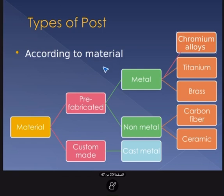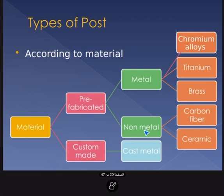There are many classifications of posts according to material. Posts can be pre-fabricated or custom-fabricated. Pre-fabricated metal posts include chromium alloy, titanium, and brass. Non-metal pre-fabricated posts include carbon fiber and ceramic fiber.